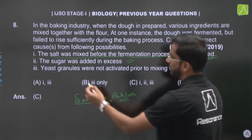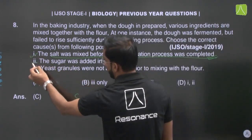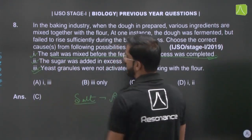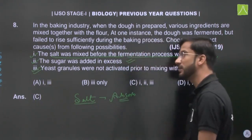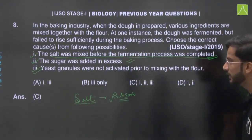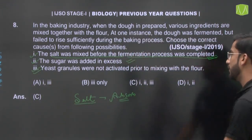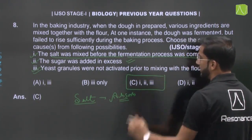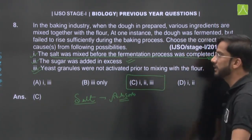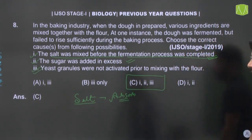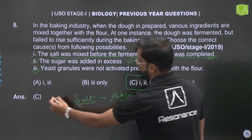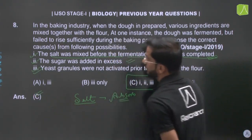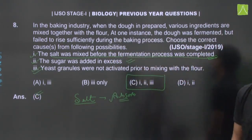All three conditions — early salt addition, excess sugar, and unactivated yeast — can each cause the dough to fail to rise sufficiently. Option A, Option B, and Option C are all correct. Therefore the answer is Option D — all of the above. Wait, the answer stated is Option C meaning all of the above in this particular option set.